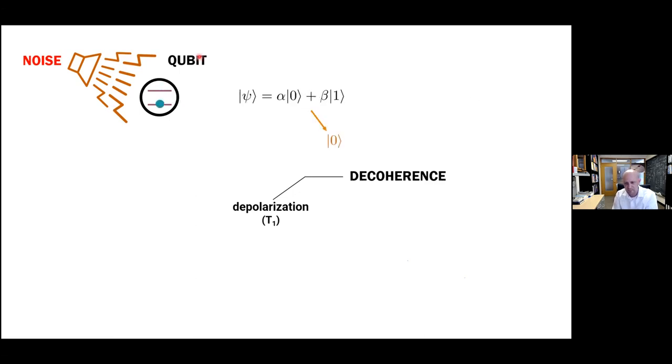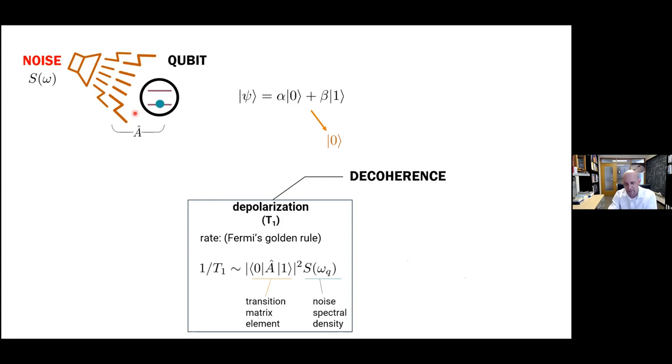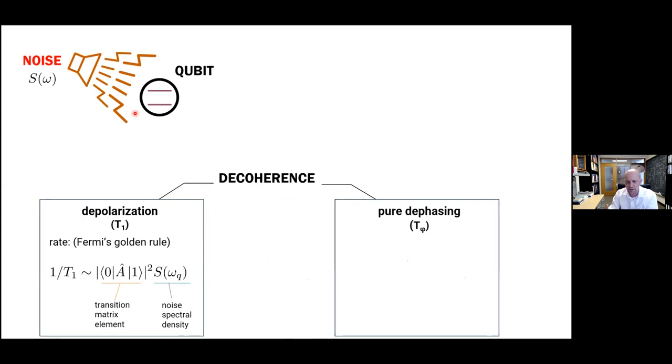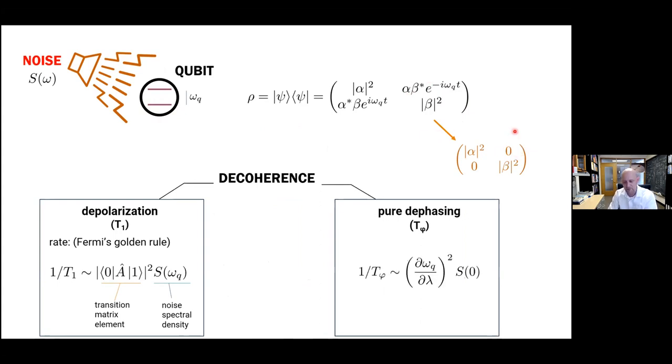So first of all, there's depolarization with a characteristic timescale of T1. And then in the simplest case depolarization corresponds to just spontaneous relaxation of the qubit state from the one state to the zero state like this. And the rate at which this occurs can be in the simplest cases that we're familiar with can be computed by Fermi's golden rule. So this involves the noise spectral density S(ω) evaluated at the qubit frequency ω_q. And then there's a transition matrix element where this operator A is in fact the operator by which the qubit couples to the environment, to the bath in question.